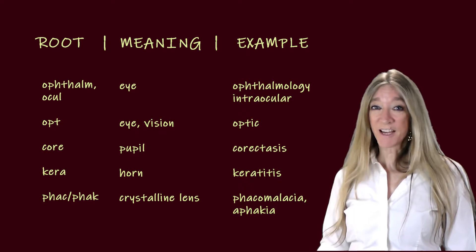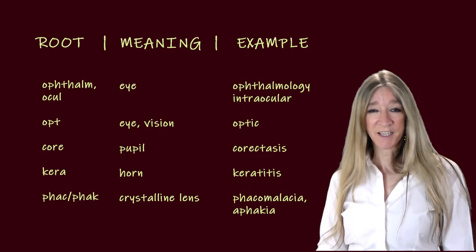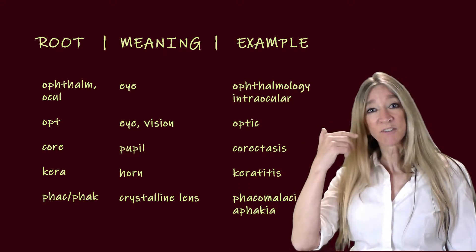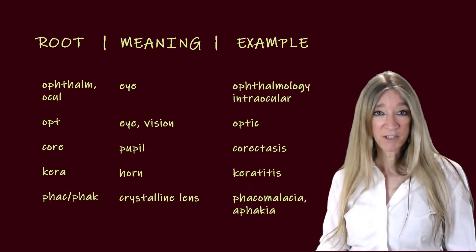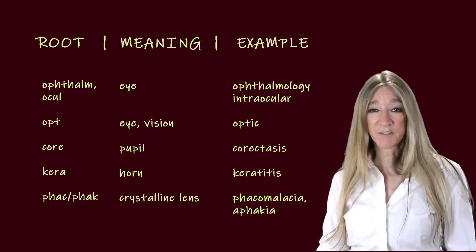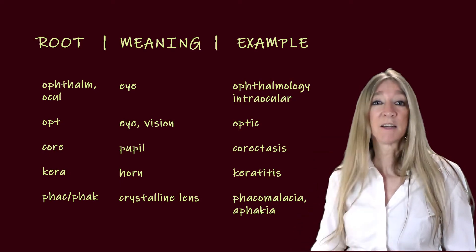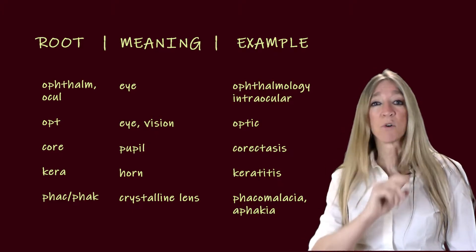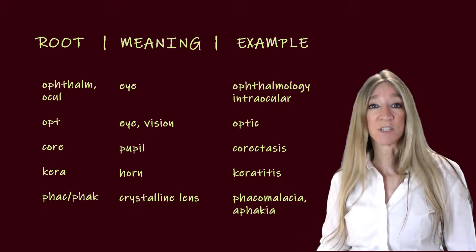The next root, phac, spelled with a c or a k. The meaning comes from lentil, and it's actually the crystalline lens, which is shaped like a lentil. Examples are phacomalacia, softening of the lens — this is actually a soft cataract — and aphacia, which is a condition in which one or more lenses are missing due to a birth defect or an injury.